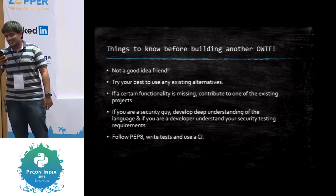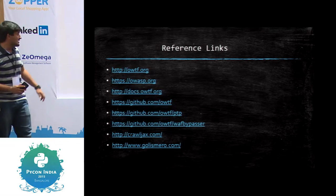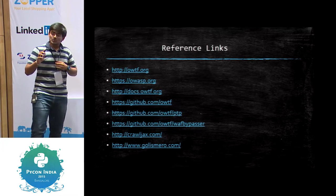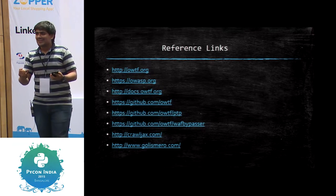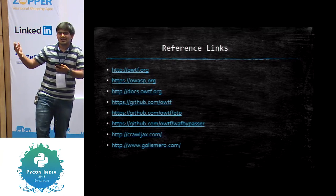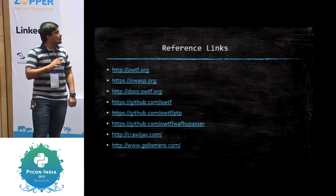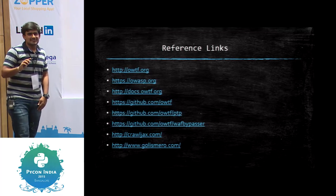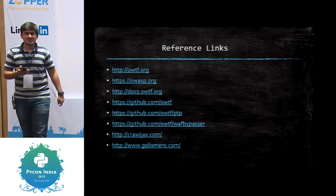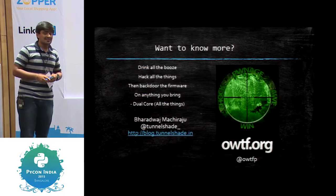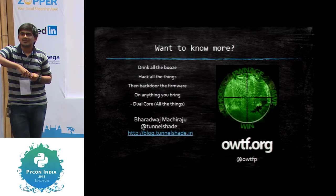Everything I spoke about is on GitHub and completely open source and free. If you want to seriously build an Ajax crawler, it's quite difficult but a great learning process — comparing DOM states is not easy. There might be a date field, CDN links that change, all kinds of things. If you have some time, go through the research paper of CrawlJax. And this is one of the alternatives to OWTF — it's a pretty good project as well. I'll take questions.